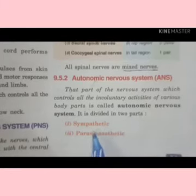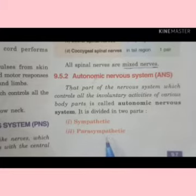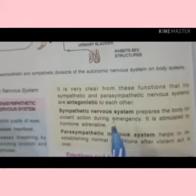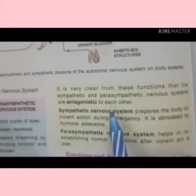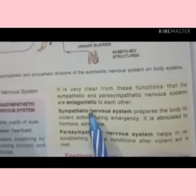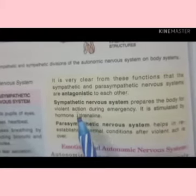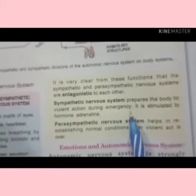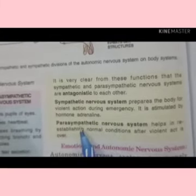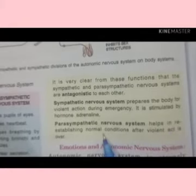The autonomic nervous system is divided into two parts: the sympathetic nervous system and the parasympathetic nervous system. Both are antagonistic — meaning opposite — to each other. The sympathetic nervous system prepares the body for violent action during emergencies, and it is stimulated by the hormone adrenaline.